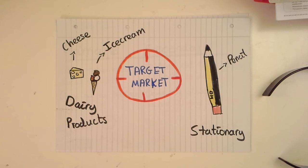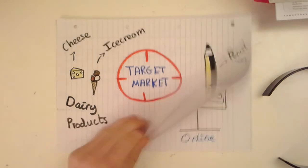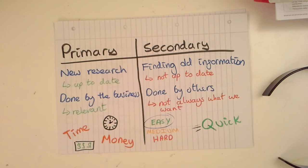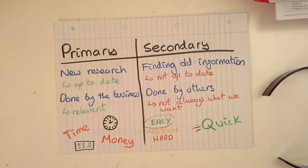Now we've worked through what market research is, I'm going to look at ways to classify different types of research. We have primary and secondary research. Primary research is new research — it hasn't been done before by anyone else. Because of this, it's up to date, not old information that's perhaps not relevant today, and hopefully this means it's more accurate and representative of today's market conditions.